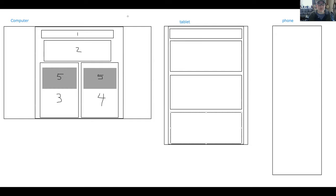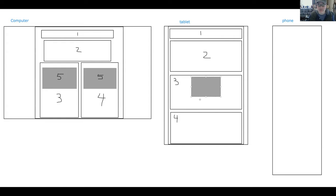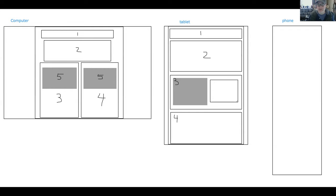So we have element one, element two, element three, and element four. The question becomes: where do we want these pictures to go? Do we want them in the middle, and then have some content underneath? Or do we want the pictures here with content next to it side by side?